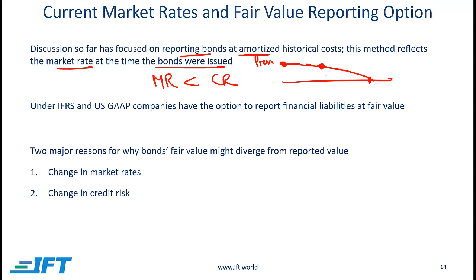If interest rates in the market change, the fair value will be different from the reported book value. Under the amortized cost method, that fair value has no impact on what is shown on the financial statements. However, under US GAAP and IFRS, companies now have the option to report financial liabilities at fair value. This means that if the fair value changes, the book value can also change, and that would require reporting either a gain or a loss.